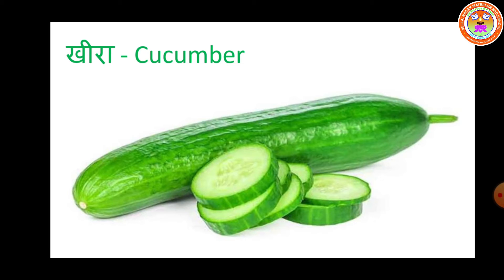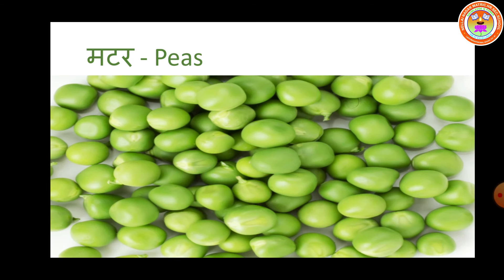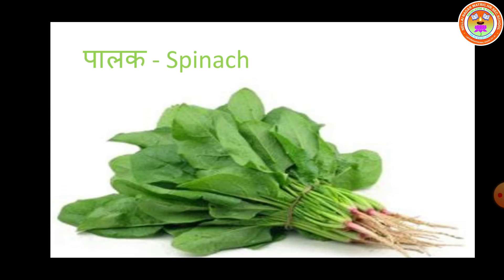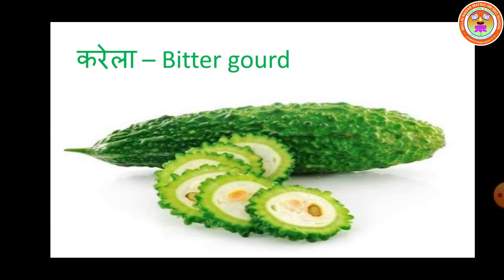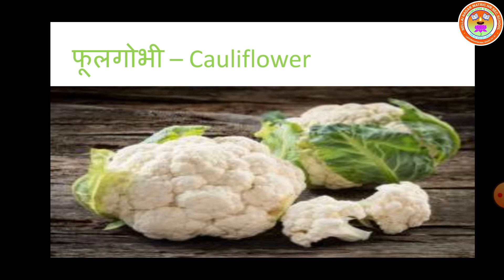Mutter — peas. Palak — spinach. Karela — bitter gourd. Phool gobi — cauliflower.